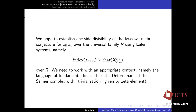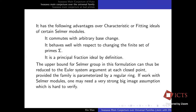We hope to establish one-sided divisibility of the Iwasawa main conjecture over the universal family R, using the Euler system argument. Namely, we want to show that the index of Kato's zeta element is ≥ the characteristic ideal of the strict Selmer group, but working over R. This is a subtle issue. The language we use is that of fundamental lines — the determinant of the Selmer complex with a certain trivialization given by the universal zeta element constructed by Nakamura and by Colmez-Wang.